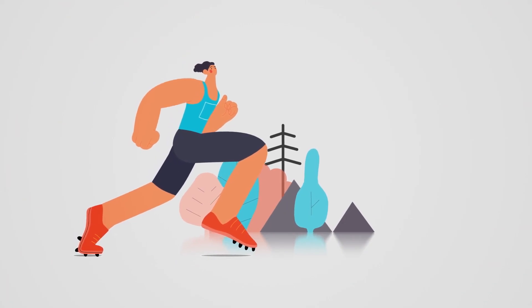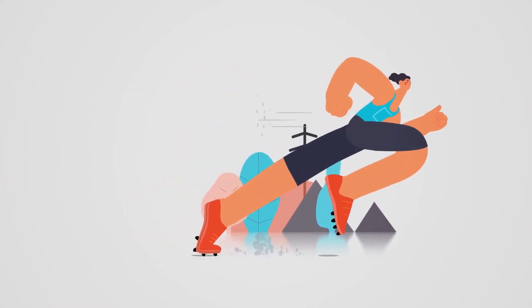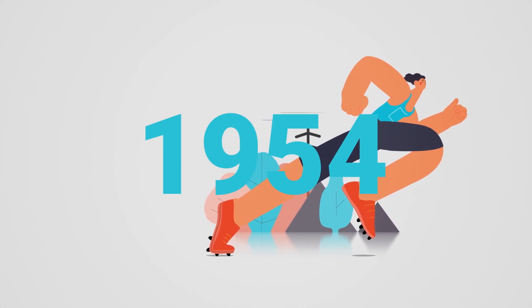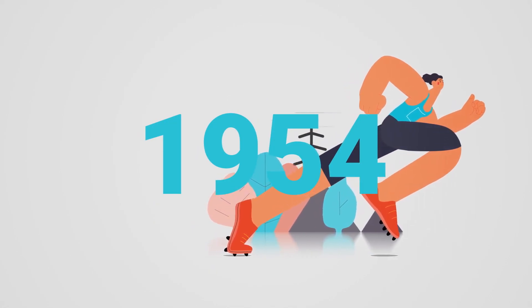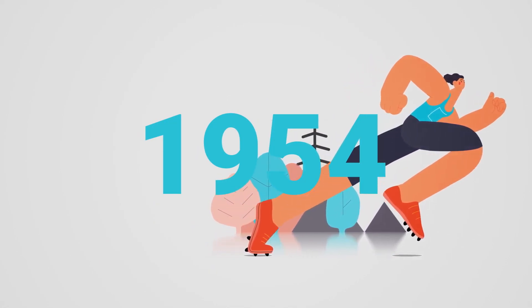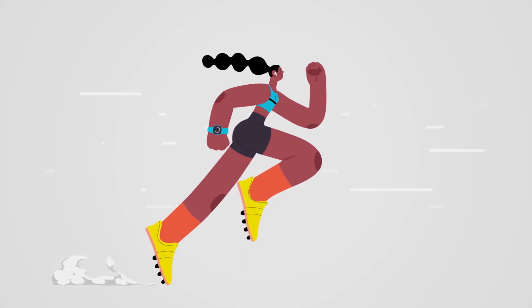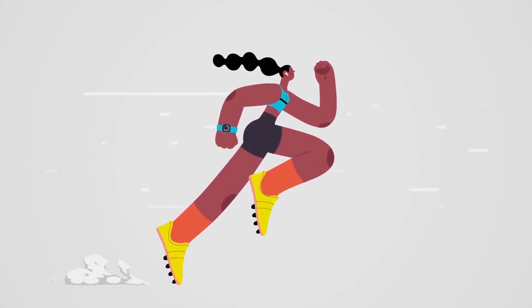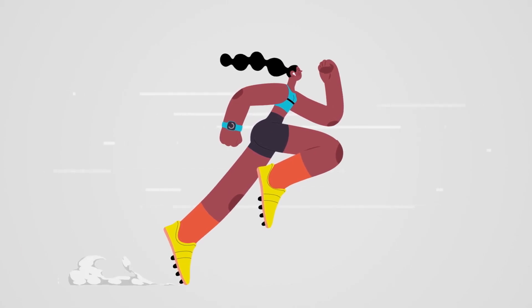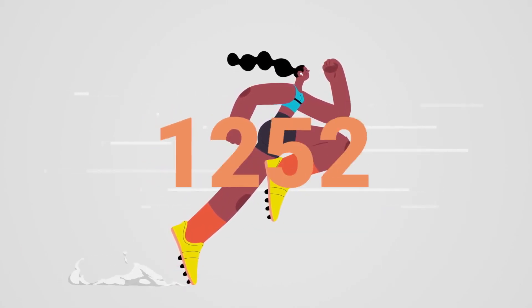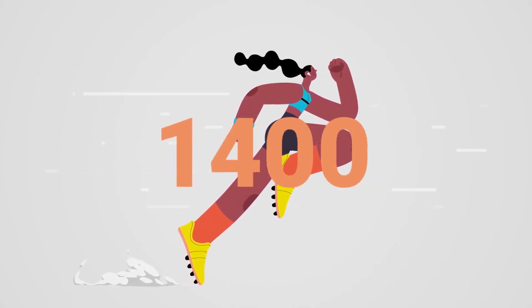People used to believe a four-minute mile was impossible. Until 1954, when Roger Bannister proved them wrong. What happened after that was even more remarkable. Just two months later, the feat was achieved again. And has been more than 1,400 times since.